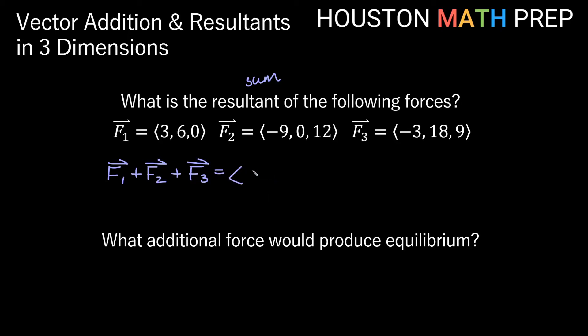So we'll end up with 3 plus negative 9 plus negative 3. Those are all our x components, comma, our y components, which are 6, 0, and 18. And adding our z components, we have 0, and 12, and 9 as all of our z components.